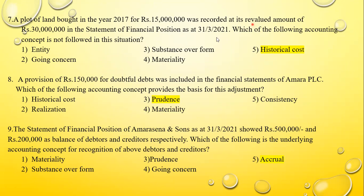Question seven: A plot of land bought in 2017 for 15 million was recorded at its revalued amount of 30 million in the statement of financial position as at 31-3-2021. Which accounting concept is not followed? The answer is historical cost, because they have revalued this land and are showing the revalued amount in the statement of financial position. Question eight: A provision of 150,000 for doubtful debt was included in the financial statements of Amara PLC. Which accounting concept provides the basis for this adjustment? The answer is prudence — you have no idea whether the debtor will pay, so you provide an amount.